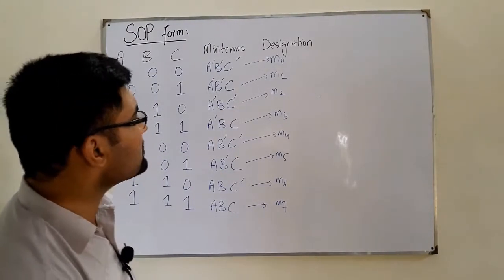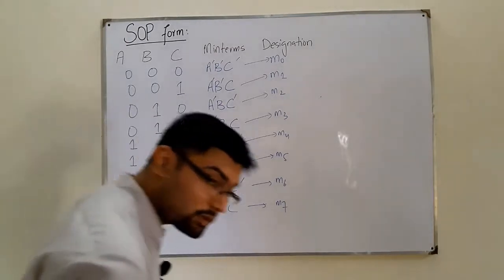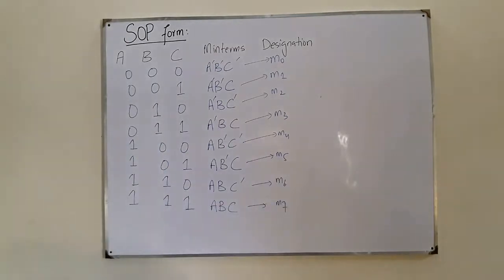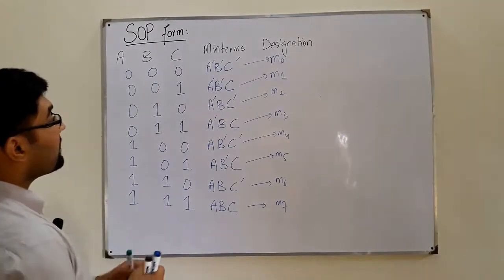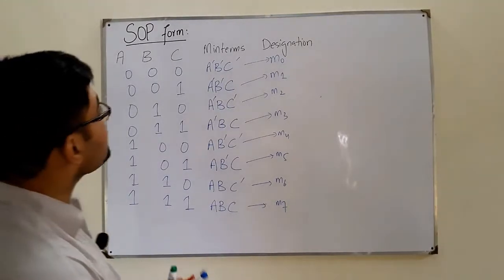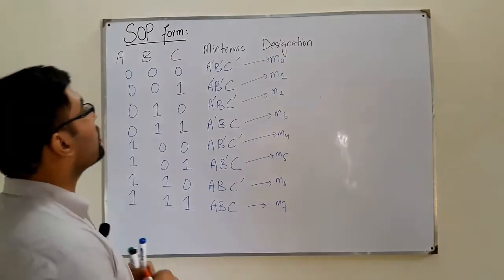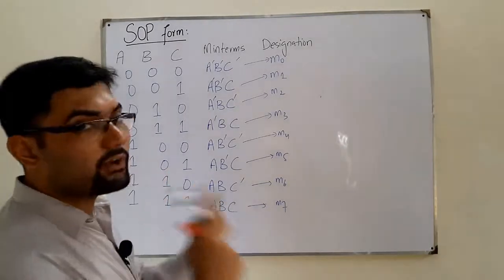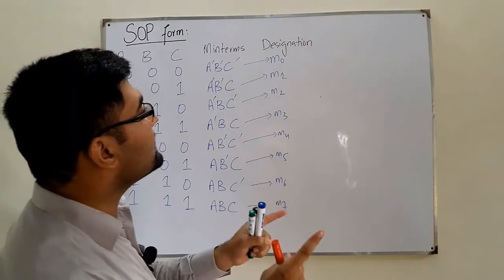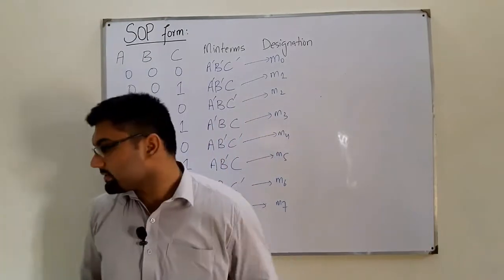This is for three variables. For two variables it's simpler and we'll solve an example so you understand. Now, the Sum of Products form is written when the function's value is high.